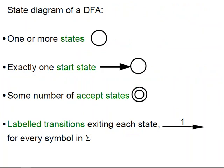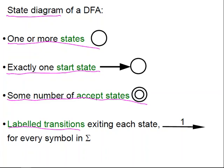So the state diagram of a DFA is made of what? It's made of one or more states, it is made of exactly one start state, and we allow for some number of accept states. Then we have labelled transitions exiting each state for any possible symbol in the input alphabet sigma.